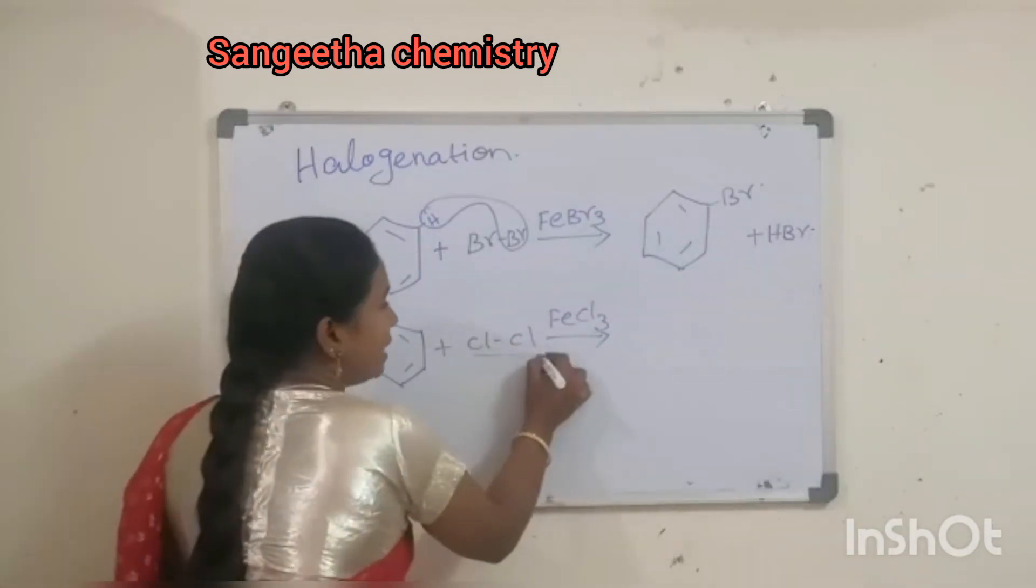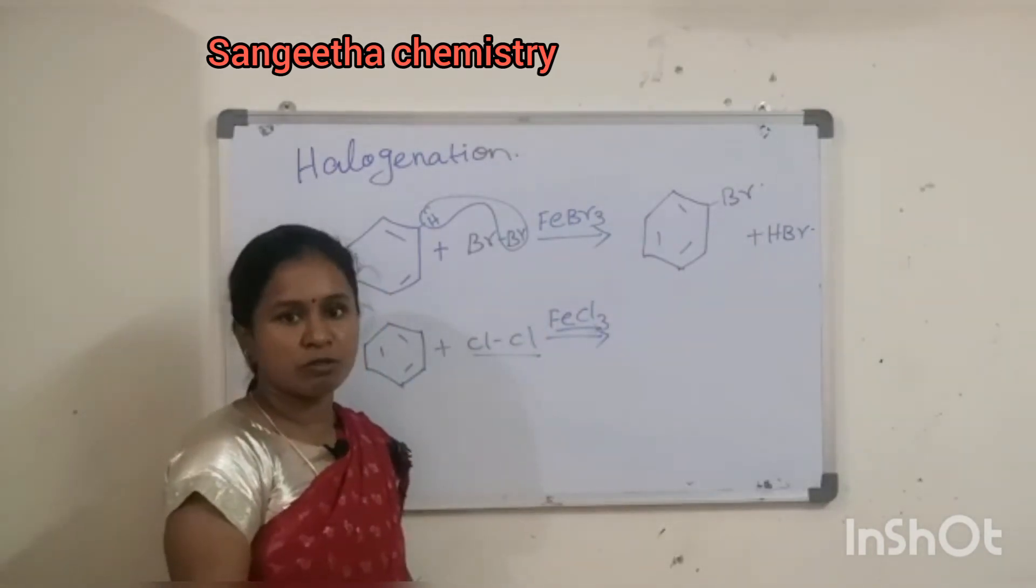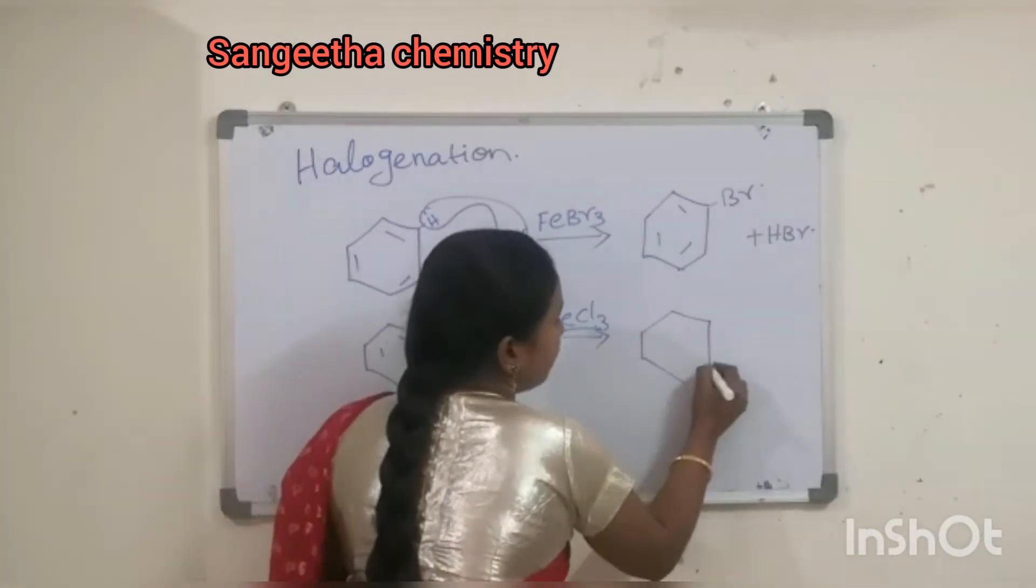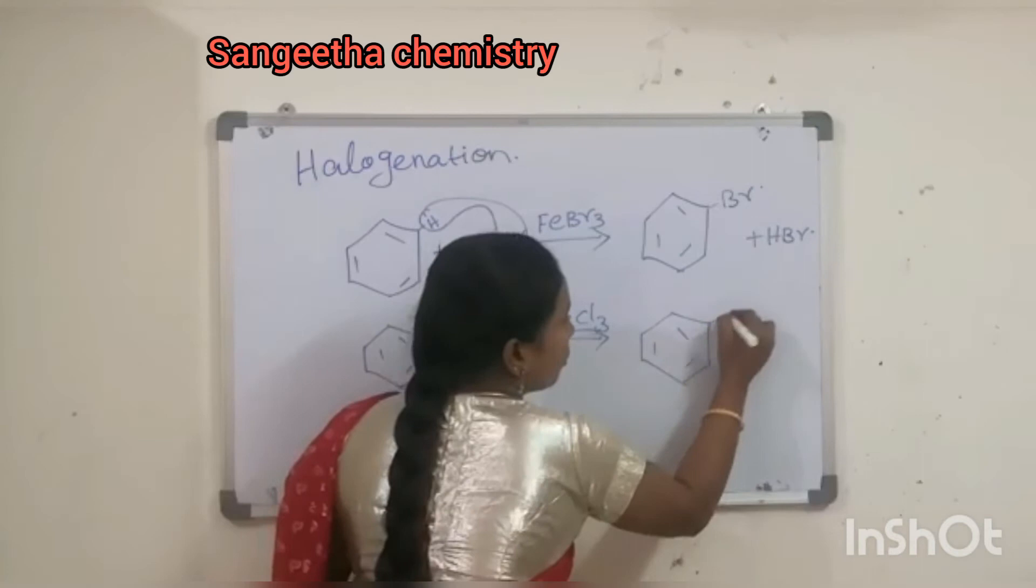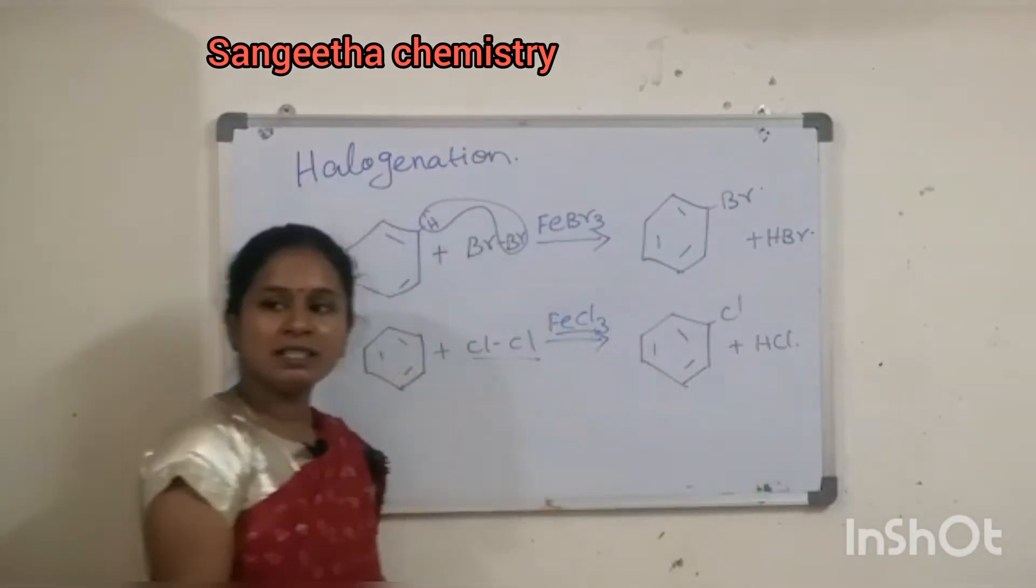Corresponding. What halogen we use, corresponding catalyst we use, the Lewis Acid. Okay? What forms? Same. What forms? Chlorobenzene and HCl. So this is halogenation of Benzene. Now I will tell you one mechanism.